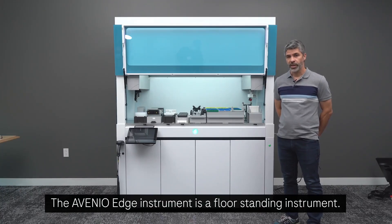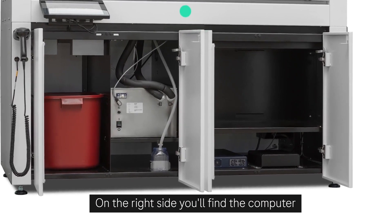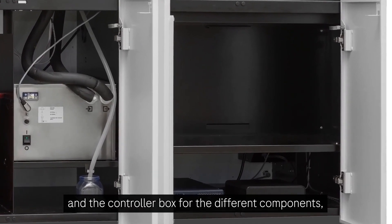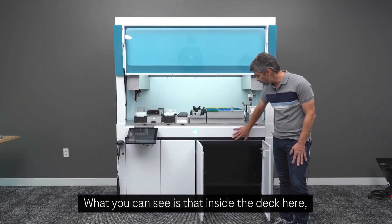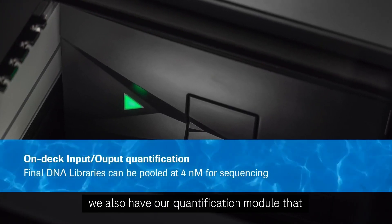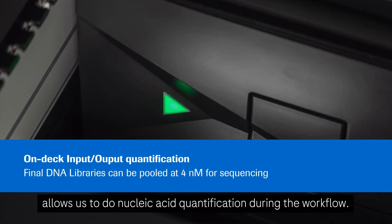The Avino Edge instrument is a floor standing instrument. On the right side, you'll find the computer and the controller box for the different components, and also some storage area. What you can see is that inside the deck here, we also have our quantification module that allows us to do nucleic acid quantification during the workflow.